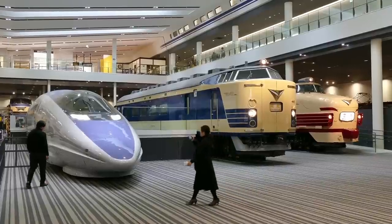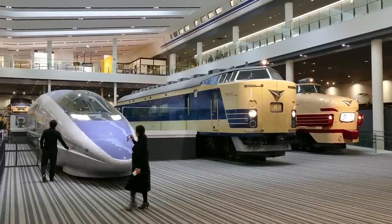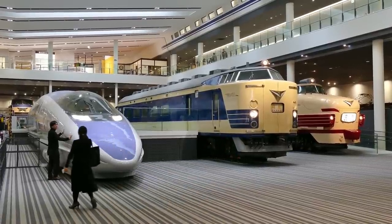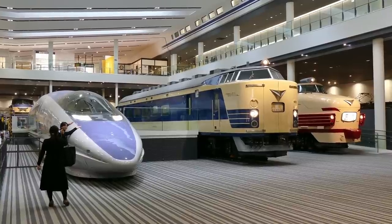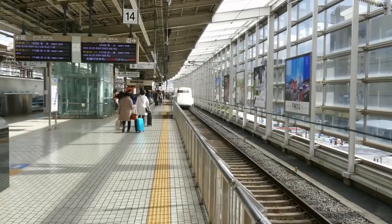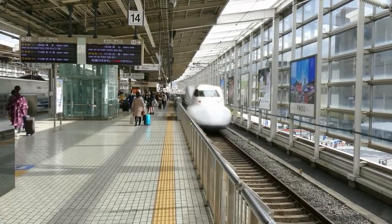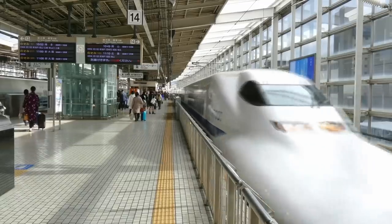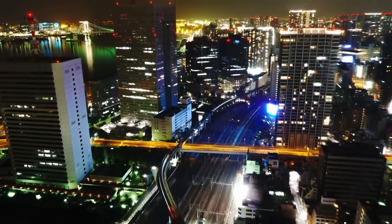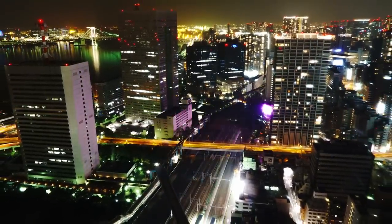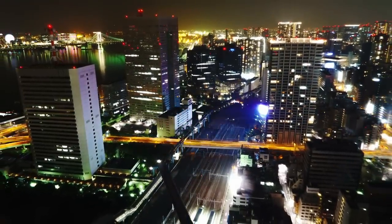At first glance, the maglev train appears sleek and futuristic. Its design embodies a streamlined shape optimized for aerodynamics to minimize air resistance and maximize speed. The train's typically composed of a series of interconnected cars, featuring large windows that allow passengers to enjoy panoramic views of the surrounding landscape. However, what truly sets the maglev train apart is its propulsion system, based on the principle of magnetic levitation.